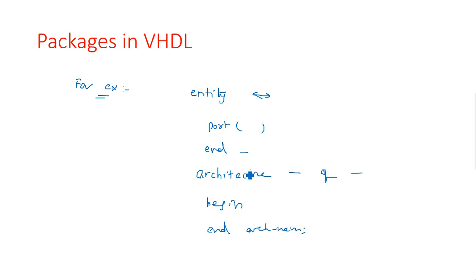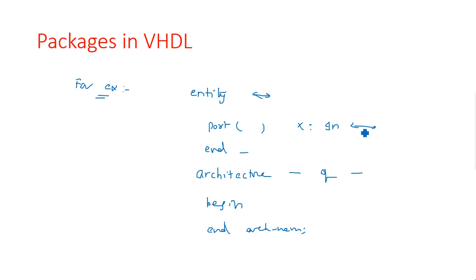In order to run a particular architecture, whatever material operations, logical operations, or variable declarations you are using — whether input port or output port — the type of the variable also needs to be considered, which is the data type. For example, if you are initializing x, what is the type of x — whether it is integer, or std_logic, or a vector.